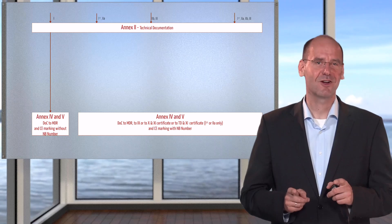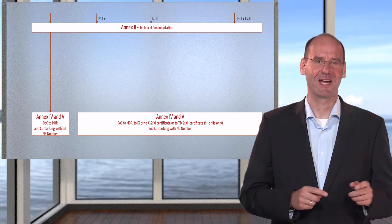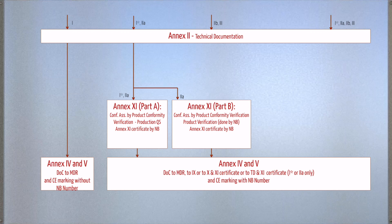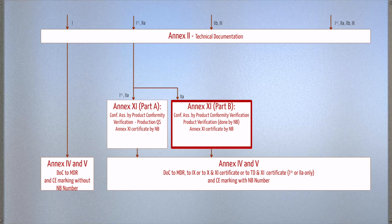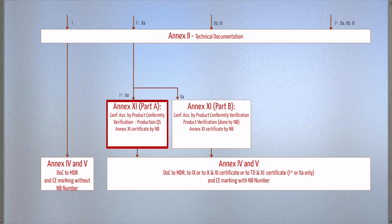Back to the class 1 star and class 2A medical devices. Manufacturers have two options. Either they mandate the notified bodies to verify each and every single product — obviously, this only makes sense for very small lot sizes or numbers — or they have the notified bodies auditing their production quality system. If they pass the audit, the manufacturers obtain an Annex certificate.